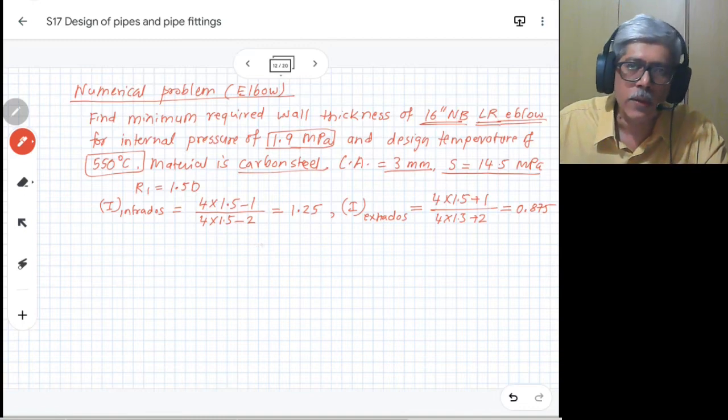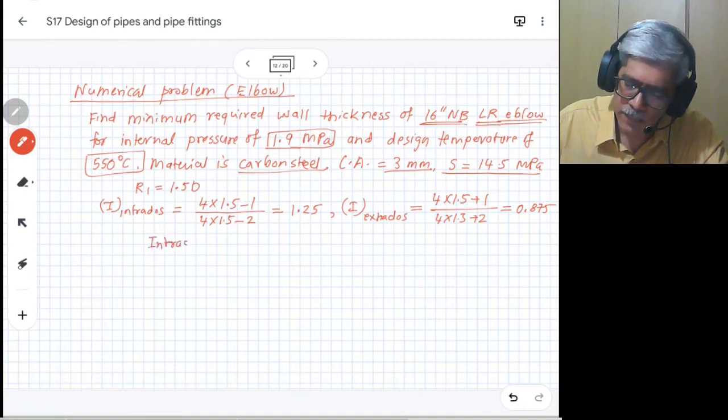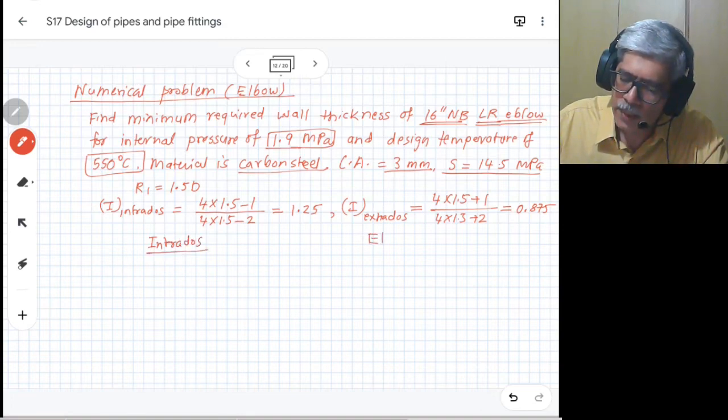So it comes out as 0.875. We will do calculation separately for intrados and extrados.